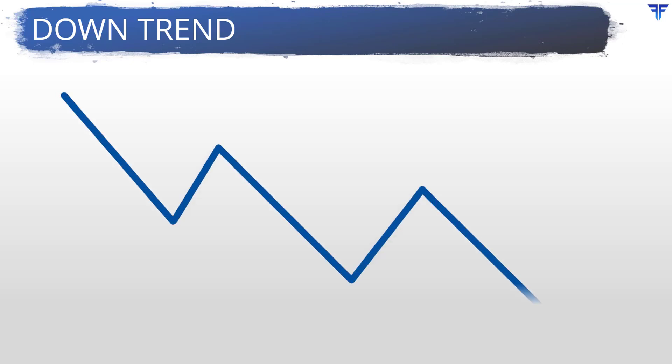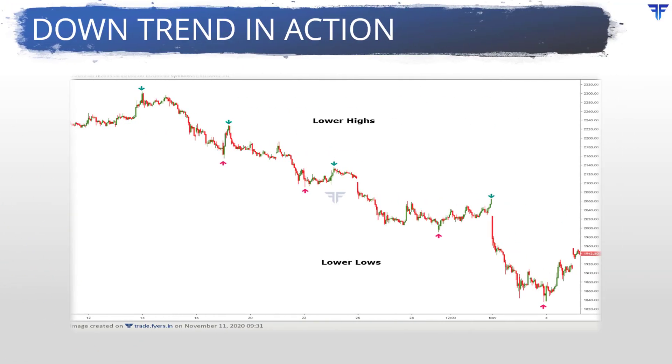The opposite of an uptrend is a downtrend. A downtrend can be defined as a series of lower lows and lower highs. Notice this chart — each low in the sequence falls below the previous low, whereas each high stops short of surpassing the previous high. A downtrend can also be defined as a sequence wherein prior supports are being broken during each downleg, but prior resistances are not being broken during each recovery. The downtrend is said to be intact as long as this sequence of lower lows and lower highs is intact. A downtrend is a period during which the sellers are in firm control of prices. Notice in this chart the downtrend in action — the price is consistently making a sequence of lower lows, marked using the red arrows, and lower highs, marked using the green arrows.